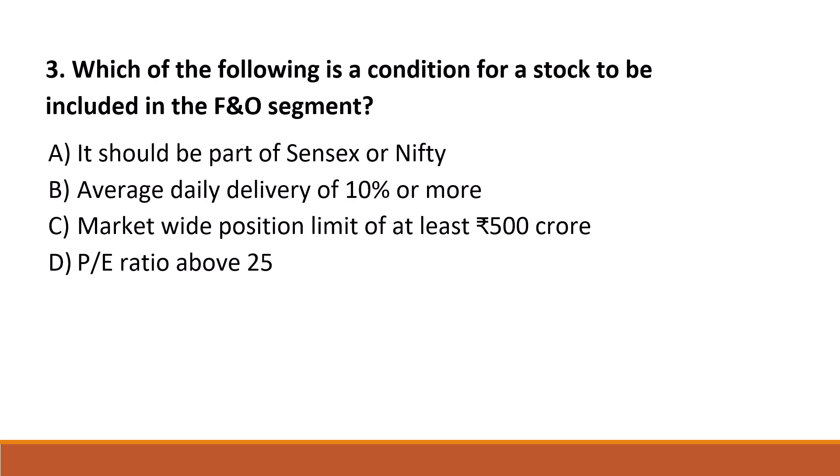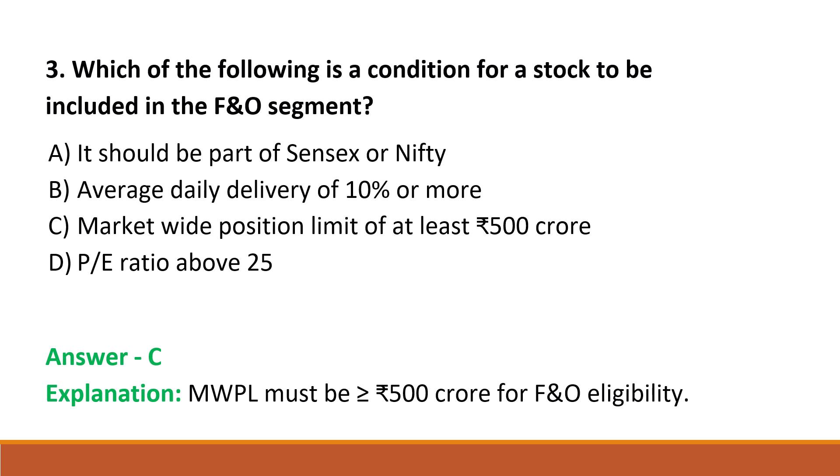Next question: which of the following is a condition for a stock to be included in the F&O segment? Option A: it should be part of Sensex or Nifty. Option B: average daily delivery of 10% or more. Option C: market wide position limit of at least 500 crore. Option D: P-E ratio above 25. The correct answer is Option C, market wide position limit of at least 500 crore.